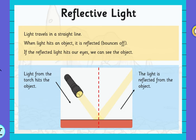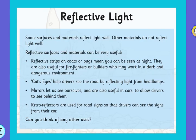As we have discussed, light travels in a straight line. When it hits an object it is reflected and bounced off. If the reflected light hits our eyes, we can see the object — so light from a torch hitting an object is then reflected and we see it. Some surfaces and materials reflect light well, while other materials do not reflect light well.